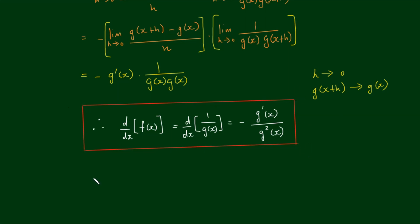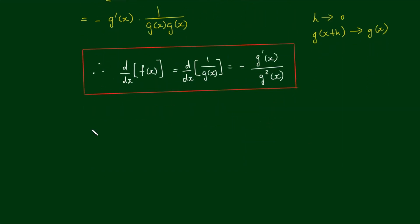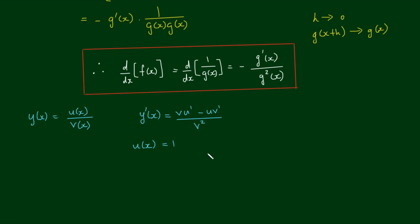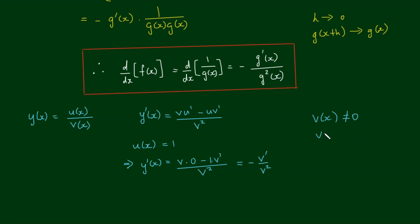You might be thinking: isn't this just a special case of the product rule or the quotient rule? The short answer is yes, and we can show that here as well. If y of x equals u of x on v of x, then the quotient rule states that y prime equals v times the derivative of u minus u times the derivative of v, all over v squared. Given that u equals 1, y prime equals v times 0 minus 1 times v prime on v squared, which simplifies to negative v prime on v squared. The condition here is that v is not allowed to equal 0, and v must be differentiable at x.